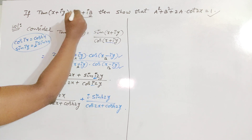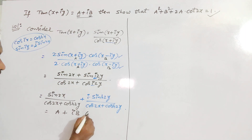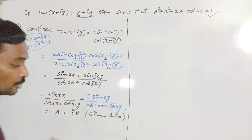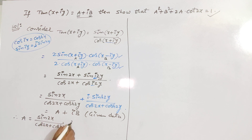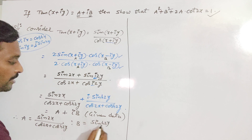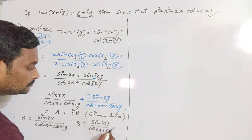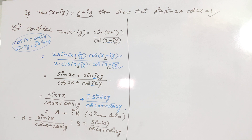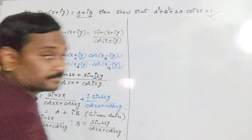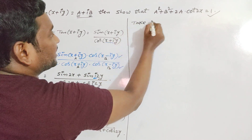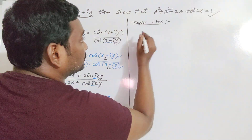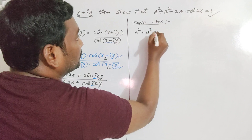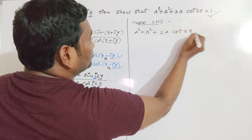We observe from the given statement that the real part is A and the imaginary part is B, giving a + ib. So A = sin(2x) / [cos(2x) + cosh(2y)] and B = sinh(2y) / [cos(2x) + cosh(2y)]. Once we get the real part and imaginary part, half of the problem is complete. Now we have to consider the LHS of the required result.